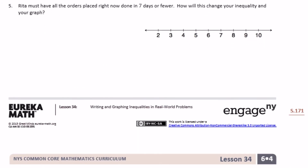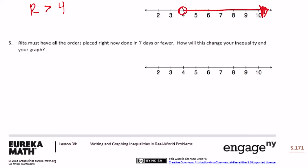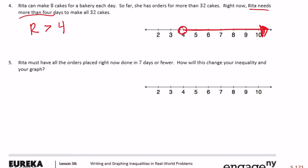Number 5: Rita must have all orders done in seven days or fewer. Before, she just needed more than four days, but now we have a deadline. She needs seven days or less, but still more than four. So four is less than the number of days Rita needs, and the number of days is less than or equal to seven. On the graph, four is open and seven is filled in — anything in between.